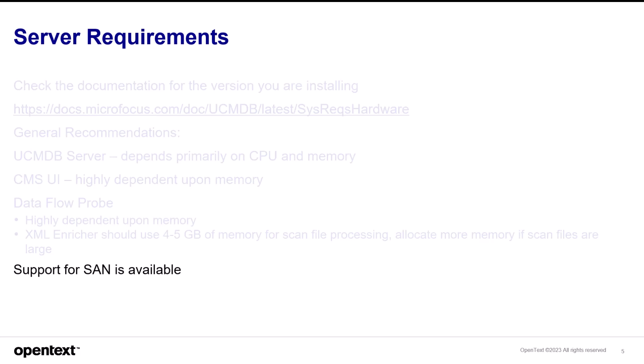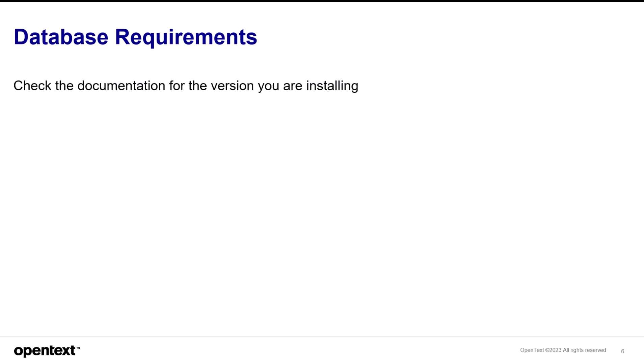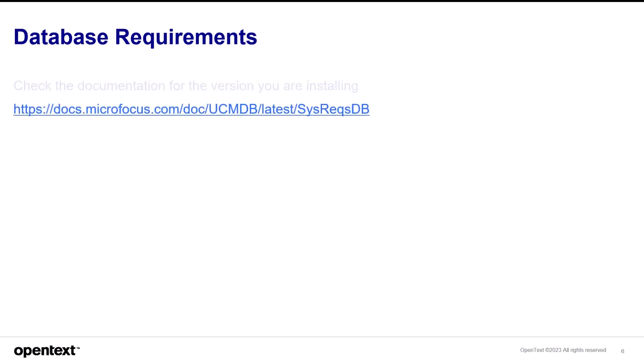Support for storage area networks is available for usable disk collection — you can use the database space for UCMDB, the Dataflow probe, and the CMS UI. You can install a UCMDB server with a storage area network as the disk attached to the server, but it's not highly recommended. Local disks, which are solid state in nature, and physical machines are the preference. You can also check the documentation for the database requirements, noting the keyword 'latest' in the URL, which will bring you to the very latest version of UCMDB documentation.